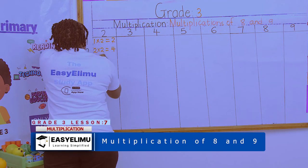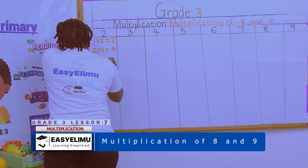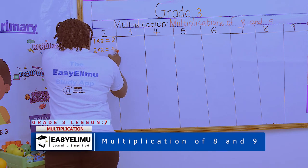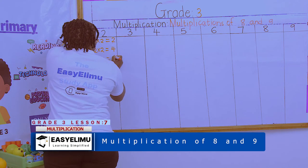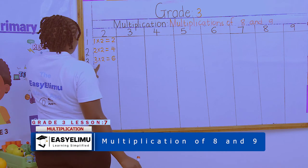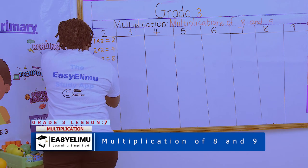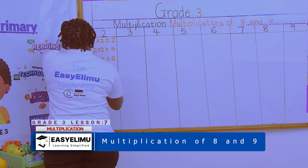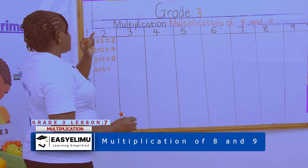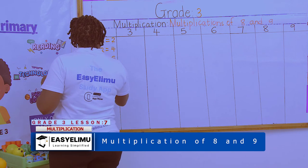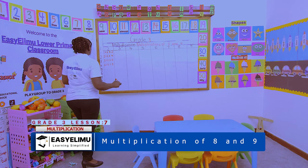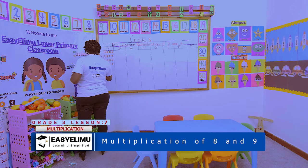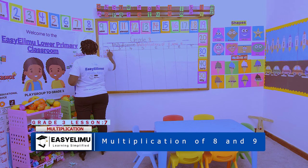Continuing: 4 × 2 — take 6, add 2 to get 8. 5 × 2 — take 8, add 2 to get 10. We are simply adding 2 to each previous answer each time.